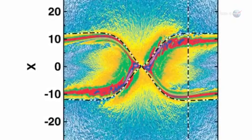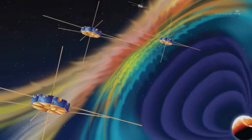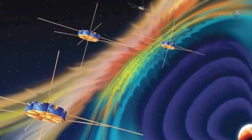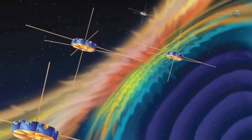A single spacecraft, properly instrumented, can make these measurements. This means that a single member of the MMS constellation, using the diagnostics, can find a portal and alert other members of the constellation.